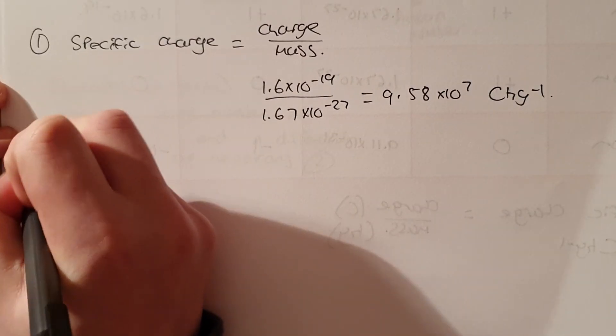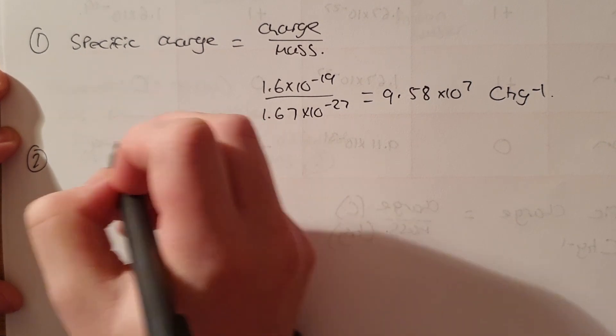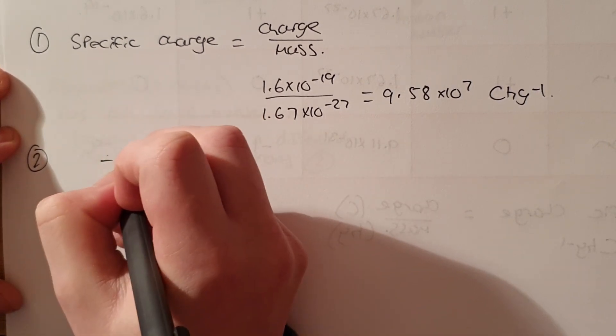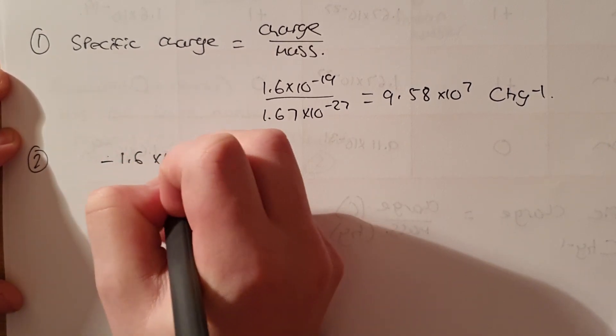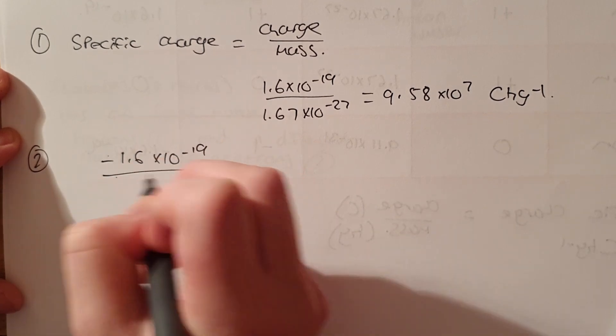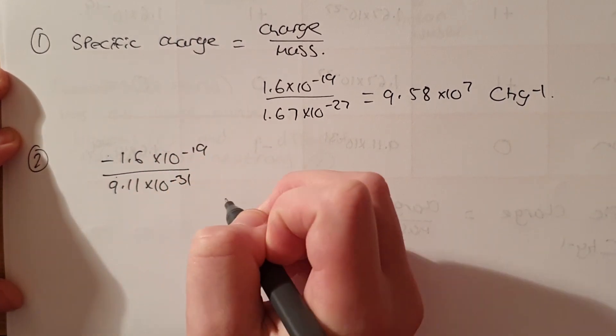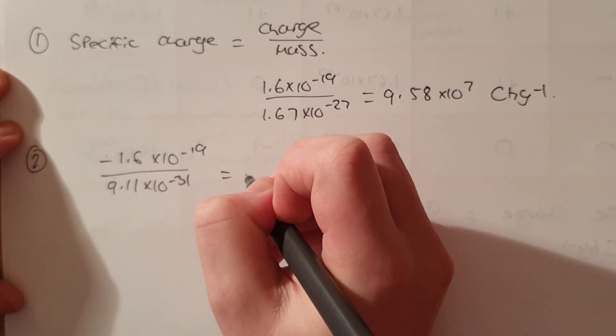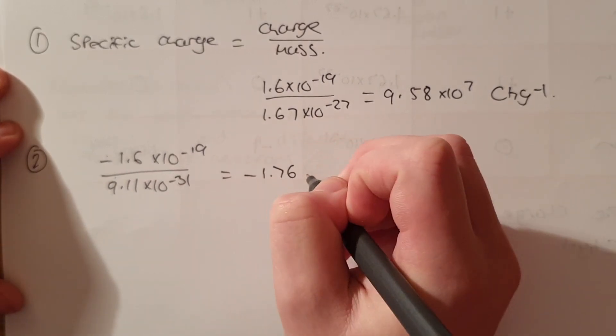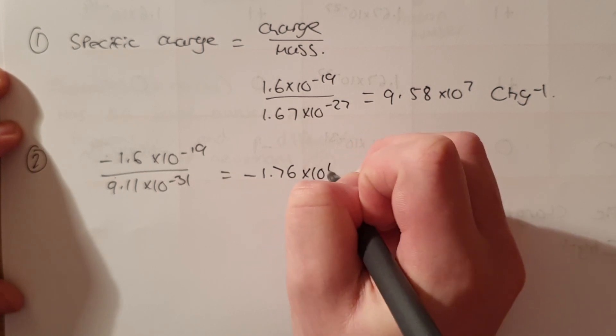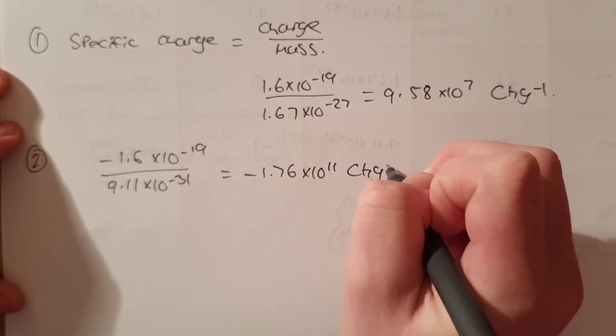Question two. Let's have a look at our electron. This time our electron has a charge of minus 1.6 times 10 to the minus 19 and has a mass of 9.11 times 10 to the minus 31 in SI units which gives me a specific charge of minus 1.76 times 10 to the 11 coulombs per kilogram.